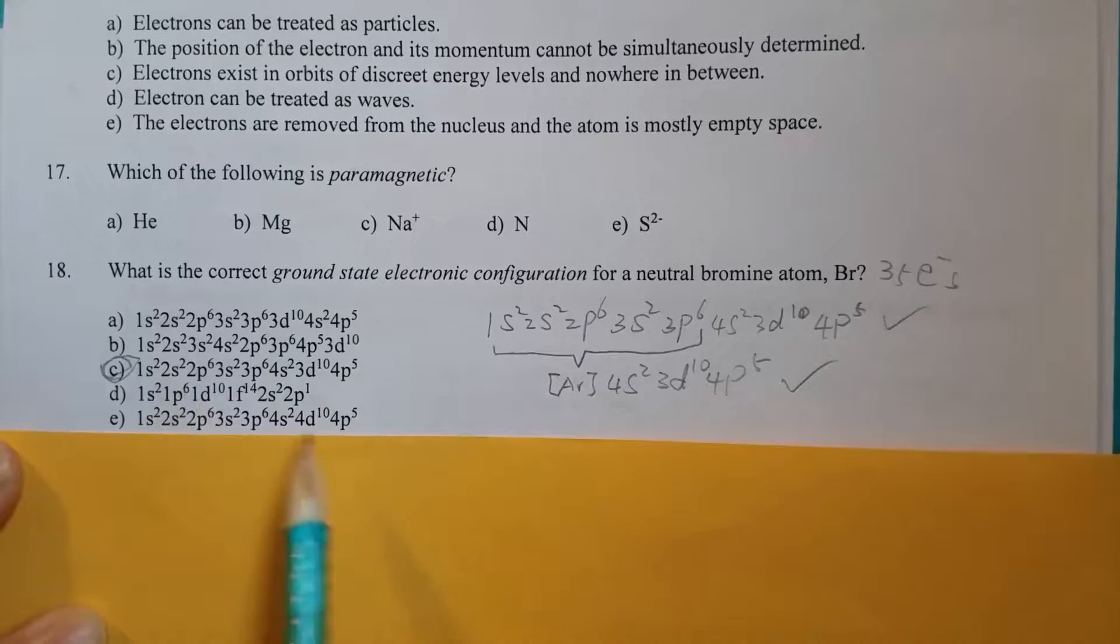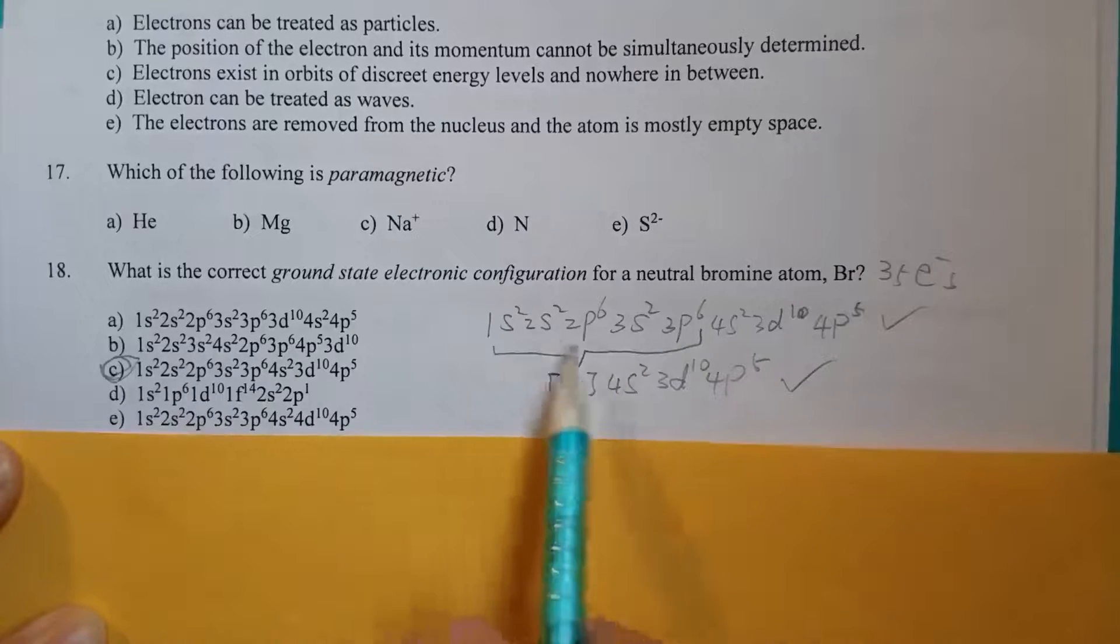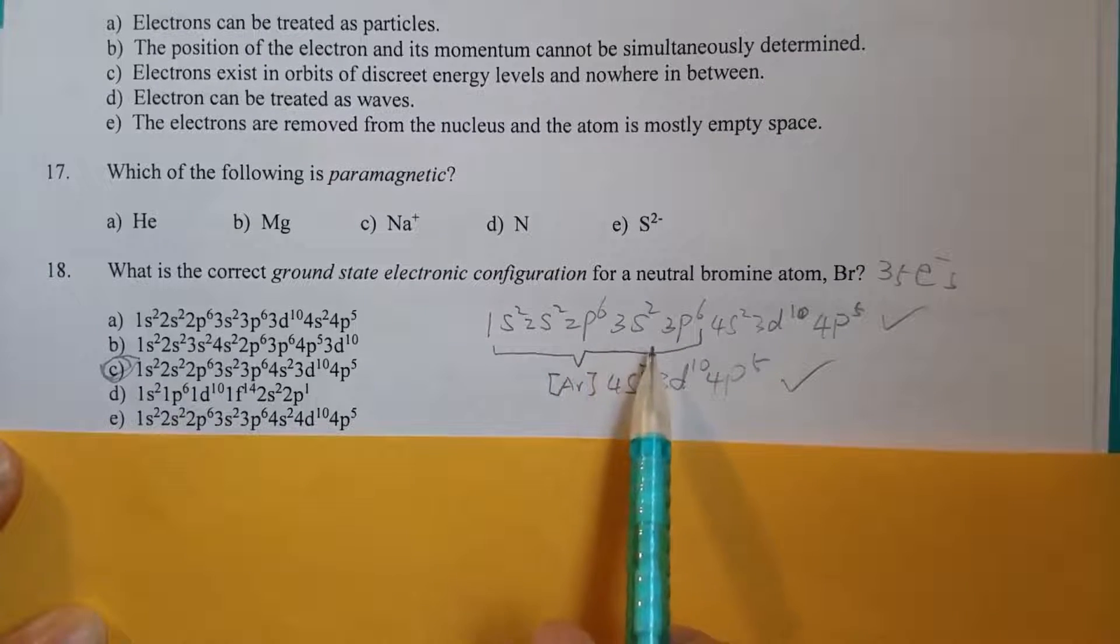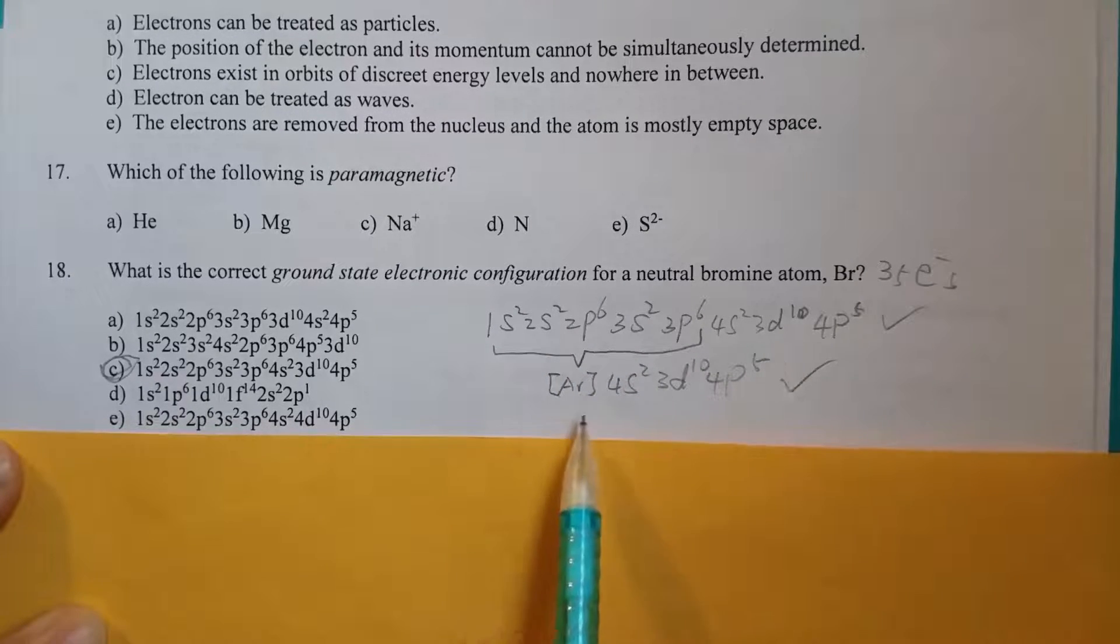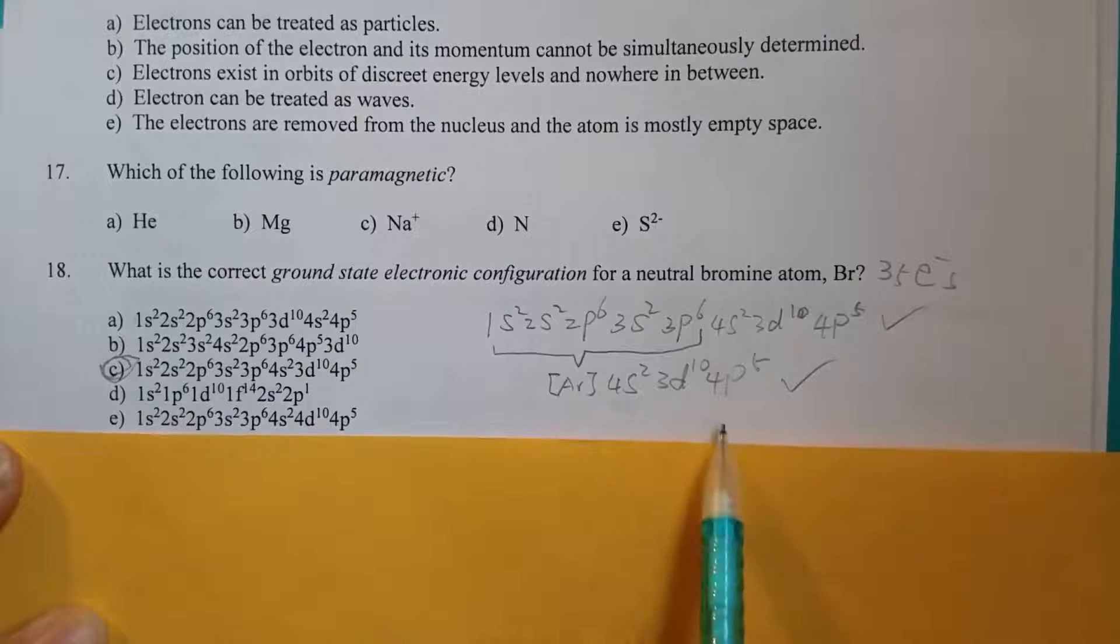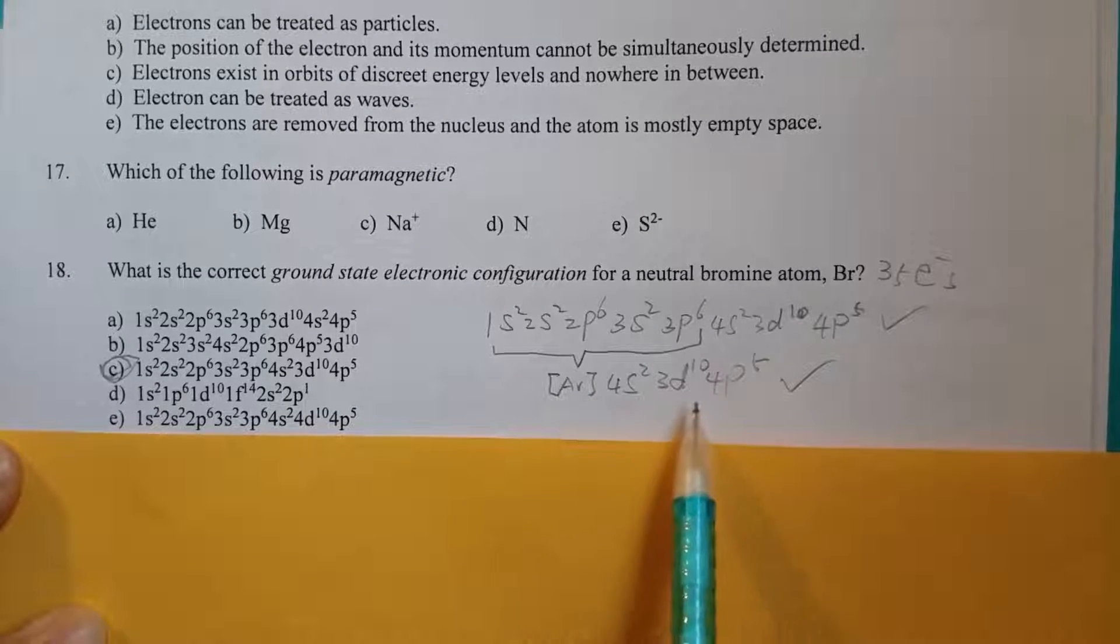So depending on what is given in the choice. All right, this is called the full electronic configuration, and this is the condensed electronic configuration or electron configuration.